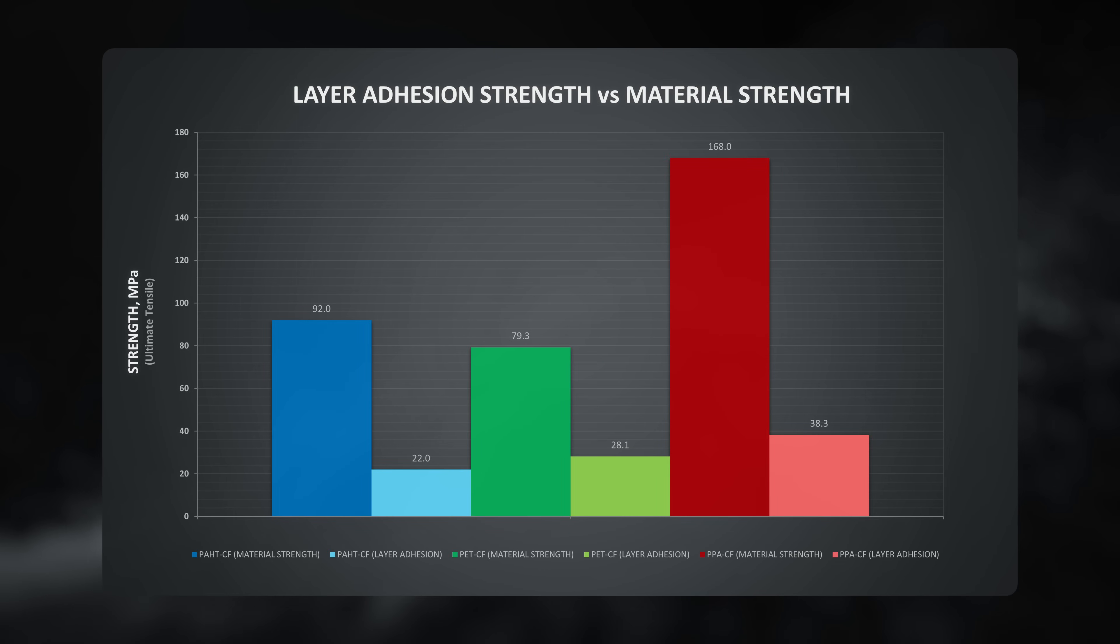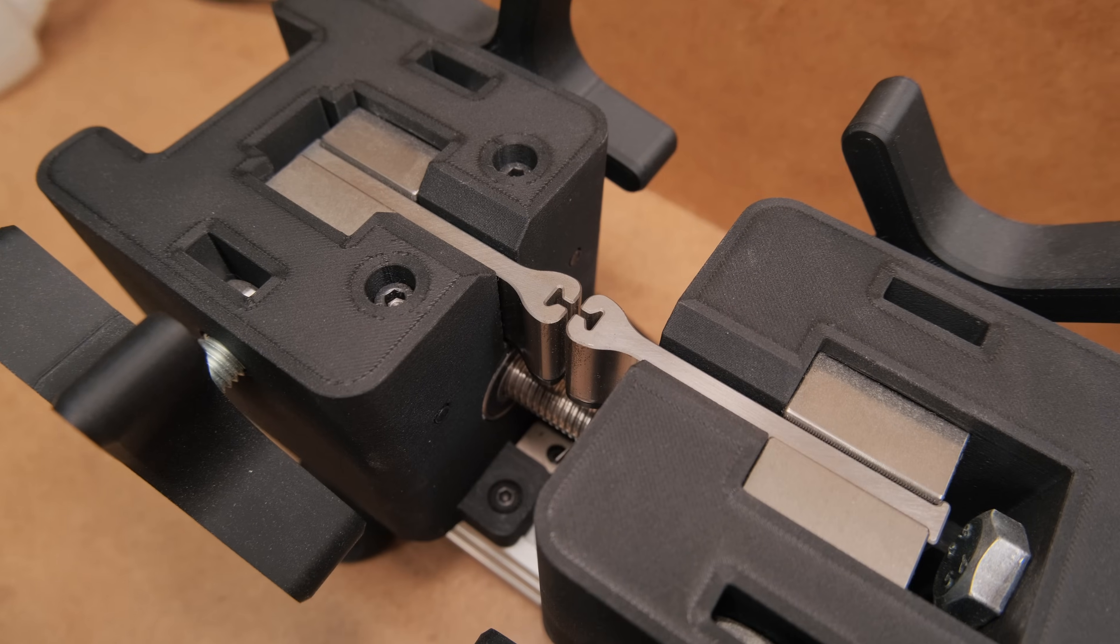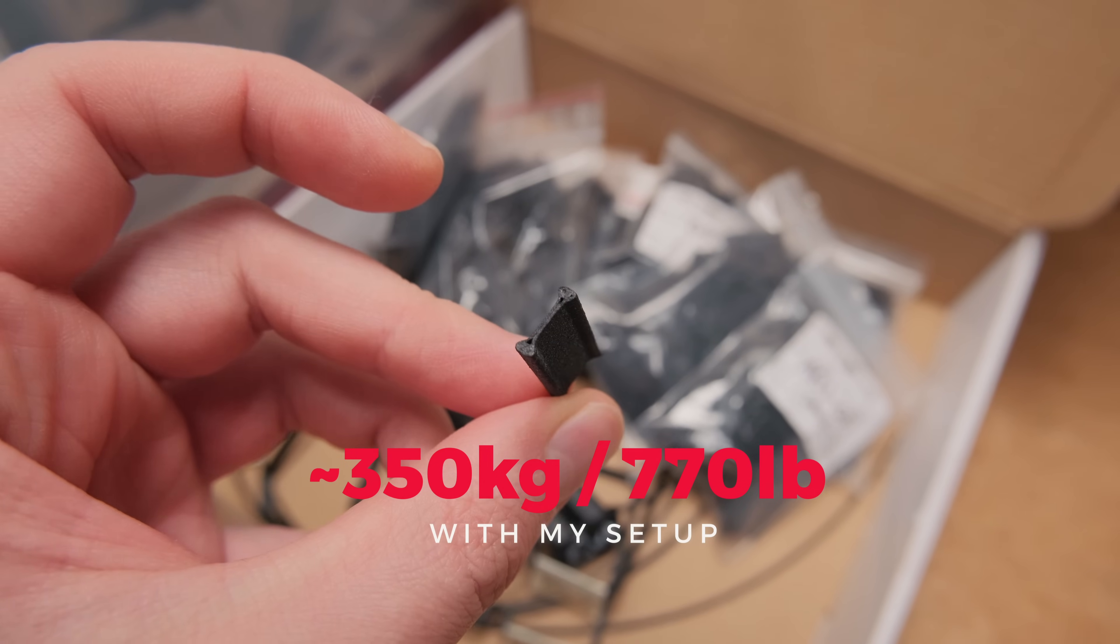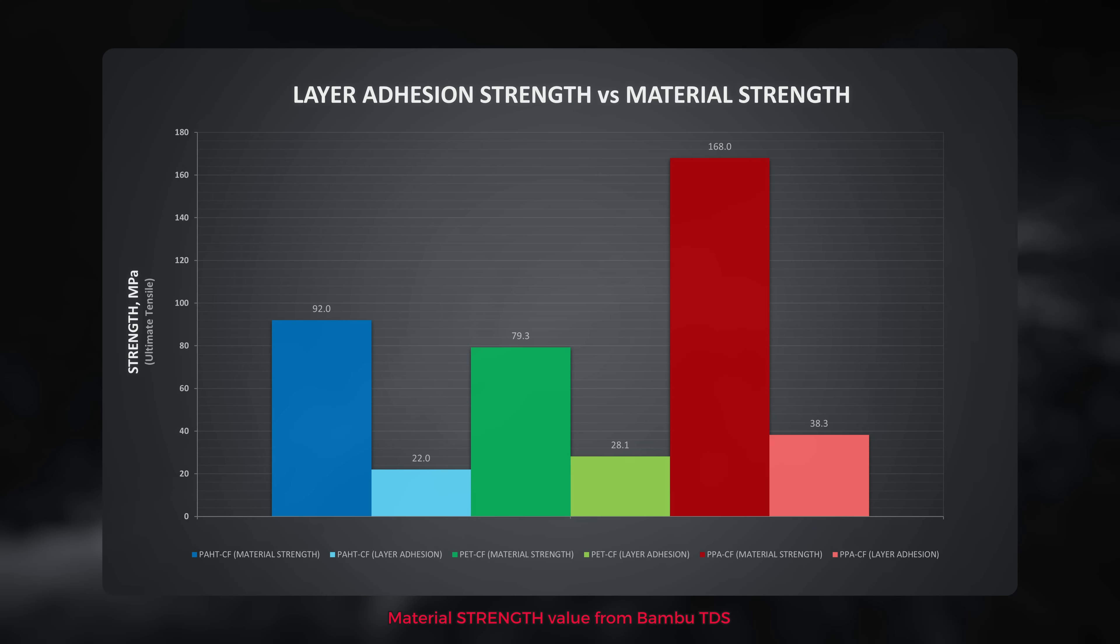Calculating the layer adhesion versus material strength made me realize how strong this filament is. With my setup, it would have reached almost 350kg load using a tiny sample like this. It ended up having a layer adhesion strength of around one third of the material strength.